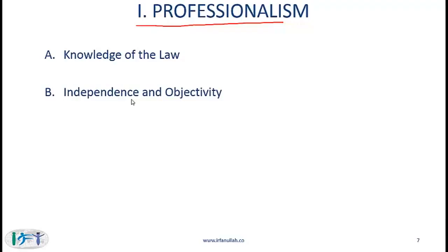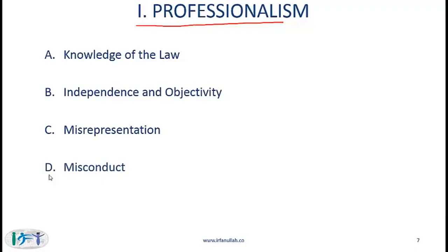Standard 1b is independence and objectivity. You must maintain independence and objectivity in your professional activities. You must not offer, solicit or accept any gift, benefit, compensation or consideration that reasonably could be expected to compromise your independence and objectivity or someone else's. Standard 1c is misrepresentation: you must not knowingly make any misrepresentations relating to investment analysis, recommendations, actions or other professional activities. Standard 1d is misconduct: you must not engage in any professional conduct involving dishonesty, fraud or deceit, or commit any act that reflects adversely on your professional reputation, integrity or competence.